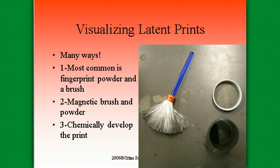When we visualize latent prints, there are lots of different ways to do it. The most common is using fingerprint powder and a brush. You may have heard them in the video talk about an ostrich hair brush — they also use horse hair brushes. The kind of brushes used for painting are usually too stiff. You want it to be real twirly and swingy so that it's very gentle and doesn't actually ruin the fingerprint.